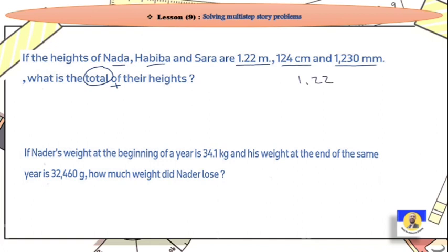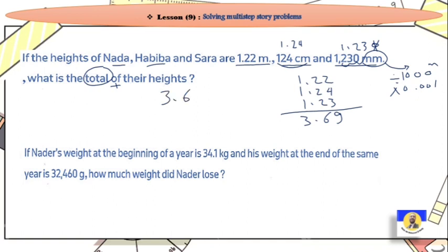I'll make them all meter. The first one, 1.22 meter, stays as is. The second one, from centimeter to meter, we divide by 100 or multiply by 0.01, which gives 1.24. From millimeter to meter, we divide by 1000 or multiply by 0.001, which gives 1.23. Now let's do plus: 2 plus 4 is 6, plus 3 is 9. 2 plus 2 plus 2 is 6. 1 plus 1 plus 1 is 3. So the total weight is 3.69 meters.